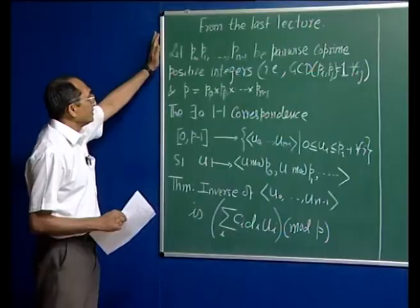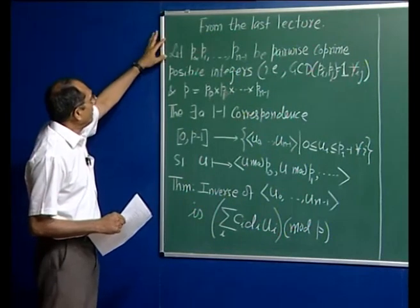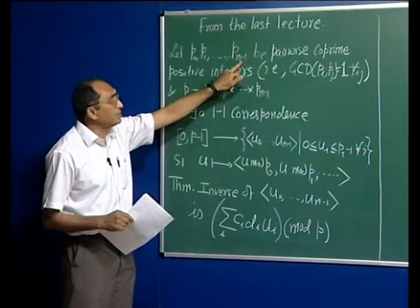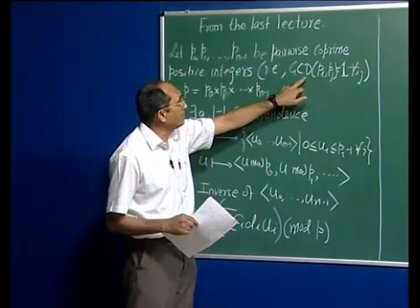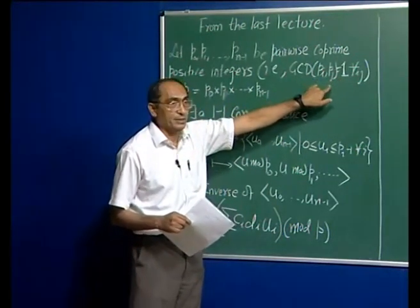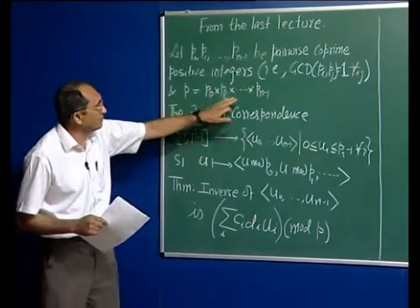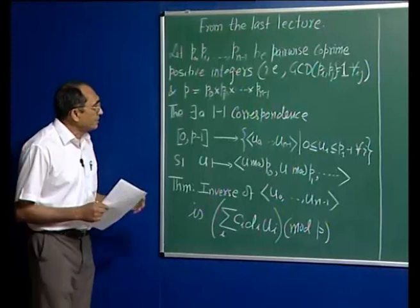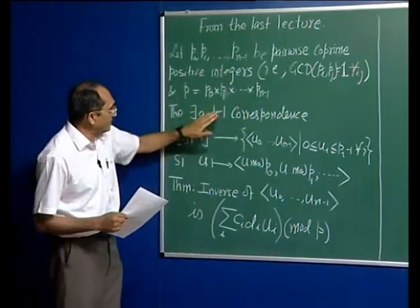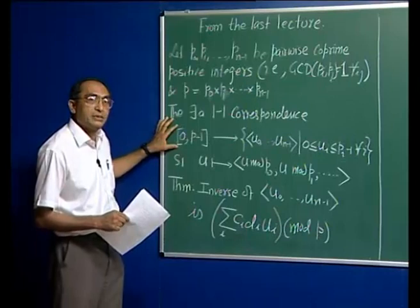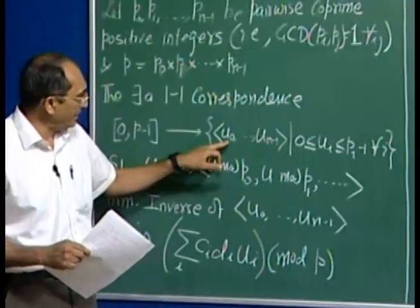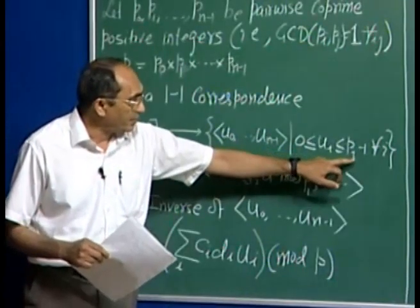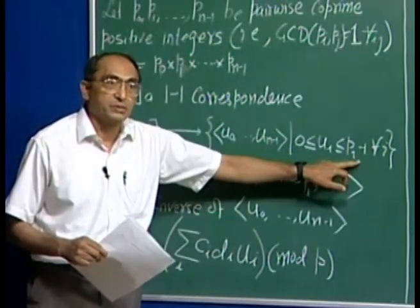In the last lecture, we introduced the Chinese remaindering theorem. Let me review quickly: we have n positive integers which are pairwise co-prime, meaning their greatest common divisor is 1 for every pair. Let P be the product of these integers. The theorem says there is a one-to-one correspondence between all integers from 0 to P minus 1 and such n-tuples, where the i-th integer is between 0 and P_i minus 1.